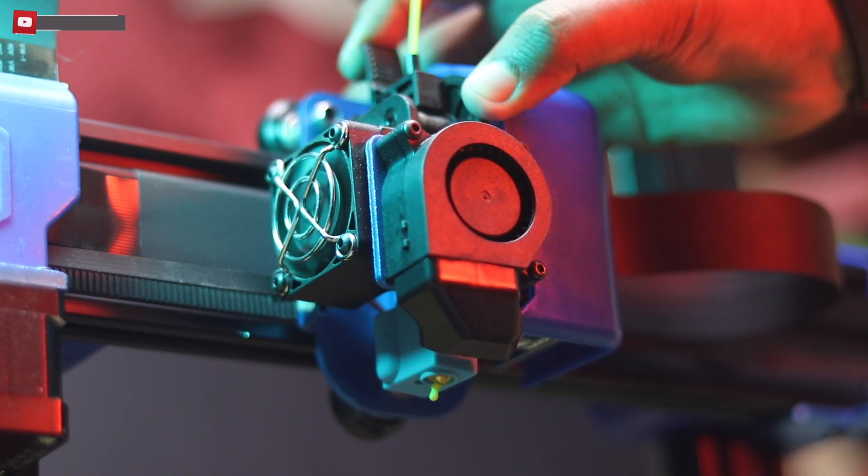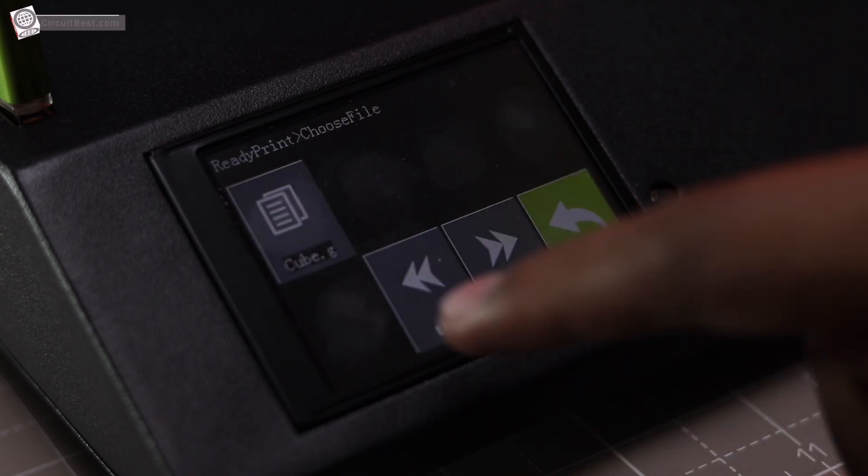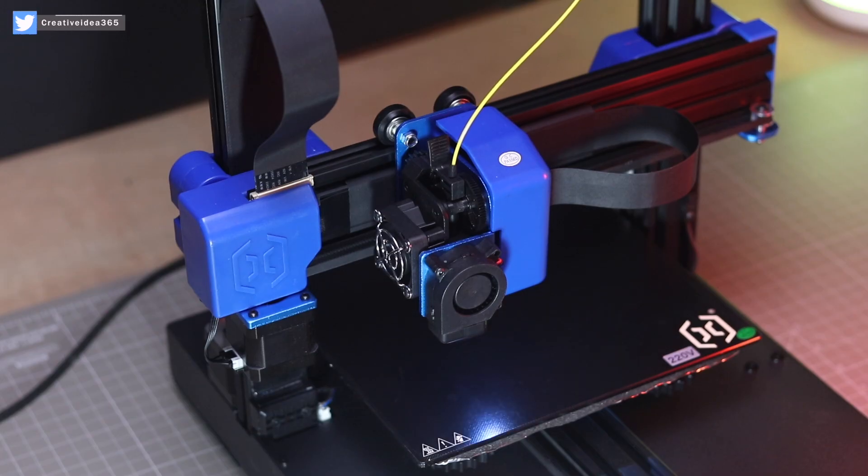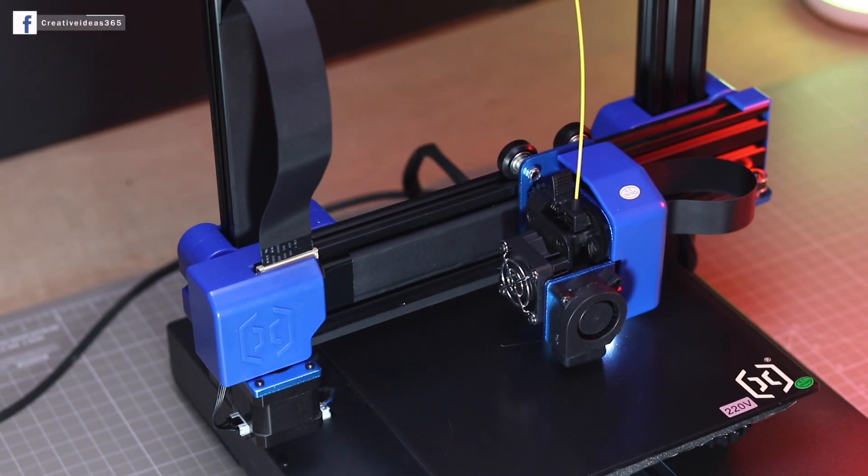First I will print this cube logo which is provided by artillery for getting an idea what print quality we can expect from this printer. So let's print it.